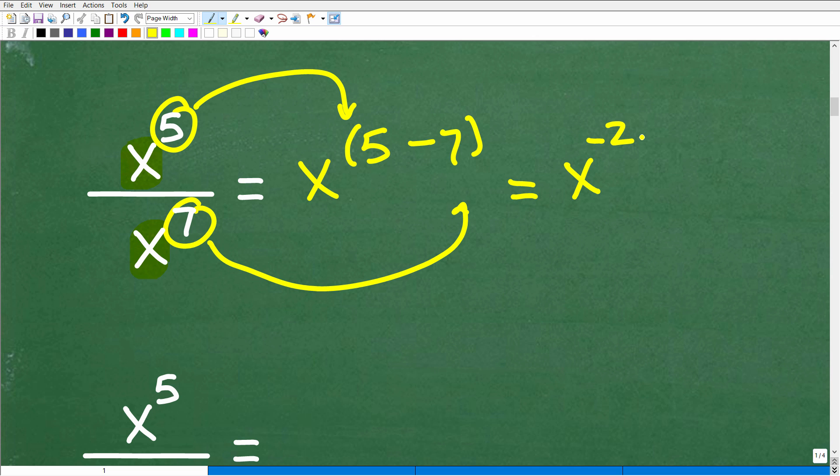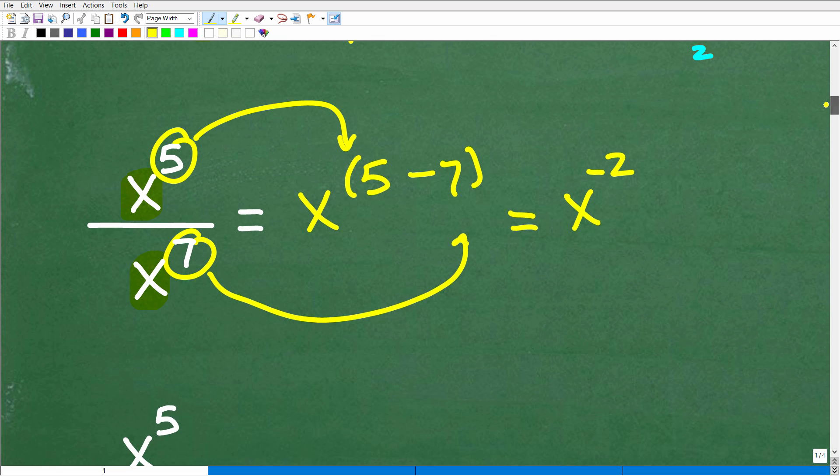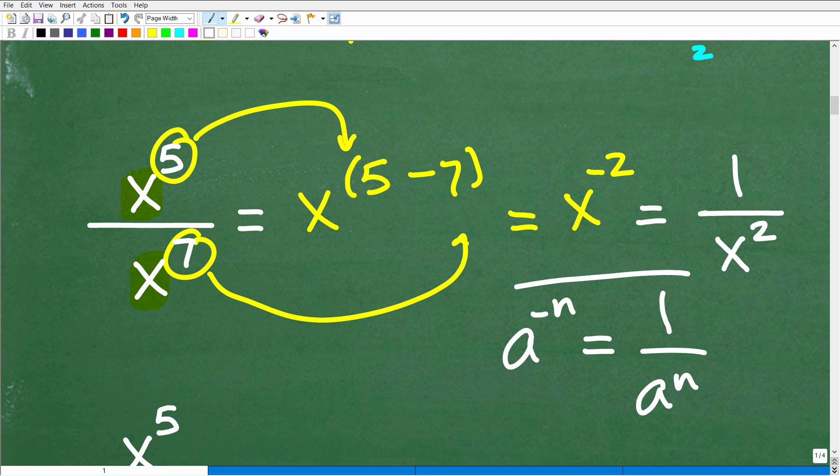Now, effectively, we are done. But remember, I said the answer is one over x squared. So why is that? Well, we don't like to leave our answers in algebra with a negative exponent. And there's another rule. That rule is a to the negative n is equal to one over a to the n. So effectively, when you have a negative exponent, we can put that over one, and it becomes positive. So that becomes one over x squared. It's following another property or law of powers and exponents.